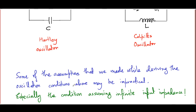We will describe the BJT version of the Colpitts oscillator, where the calculation must be redone with slightly different results, though the basic oscillation idea persists. We will also discuss a FET-based Colpitts oscillator — two capacitors and one inductor — and find the condition on the FET transconductance. For the BJT amplifier, we will find the condition on HFE, the forward current gain, for oscillations to occur.